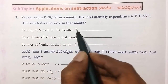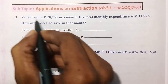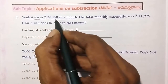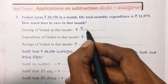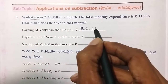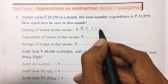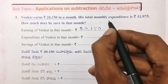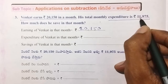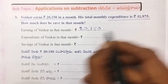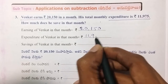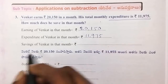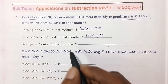Earning of Venkut in that month is $20,150. Expenditure of Venkut is $11,975. Savings of Venkut in that month.